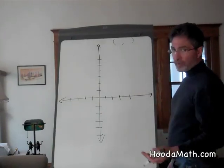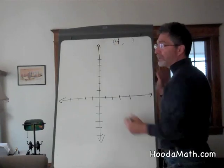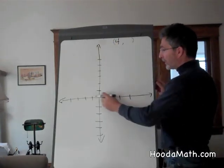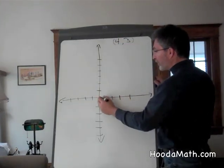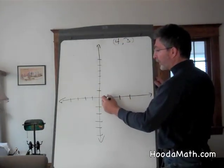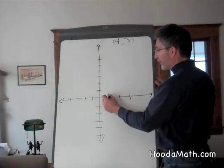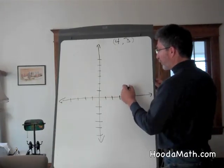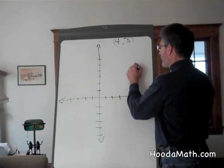Now, if we had our first location being four units or four blocks to the east of the center of the city, and three blocks to the north of the city, we would locate our first coordinate point here. One, two, three, four. One, two, three. Four, comma, three.